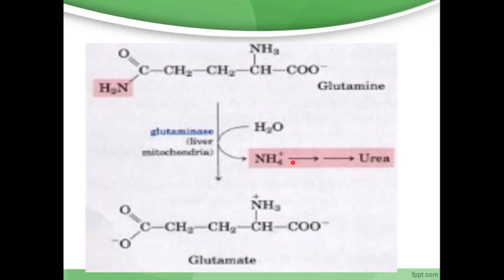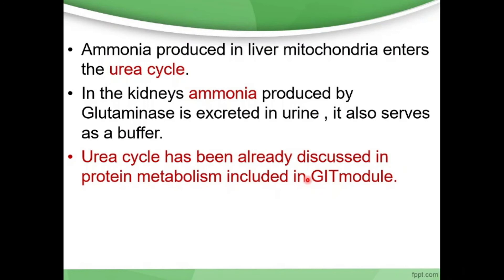It is NH3, not NH4+, which is converted to urea. NH4+ is hydrolyzed. If you look at the urea cycle, it is NH3 which is converted to urea. Ammonia produced in the liver enters the urea cycle. In the kidneys, ammonia produced by glutaminase is excreted in urine and also serves as a buffer.